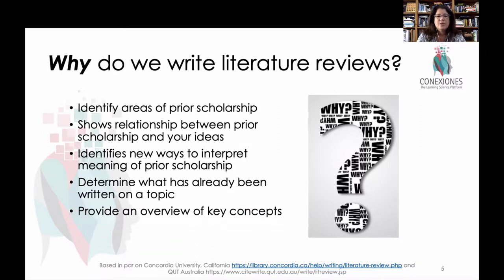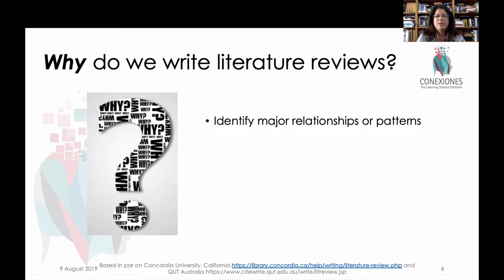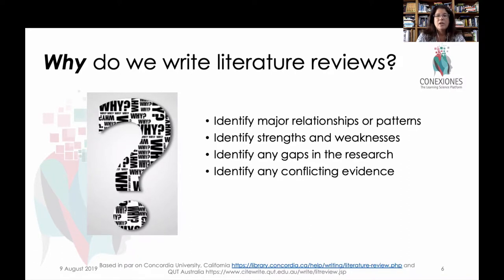The literature review provides an overview of key topics related to your research question. In doing this, you identify major patterns or relationships within the literature and research done on your topic. You can identify strengths, weaknesses, and gaps in the literature, and become expert at identifying conflicting evidence — where one author said one thing and another said something different. Part of your contribution becomes identifying those conflicts within the literature itself.